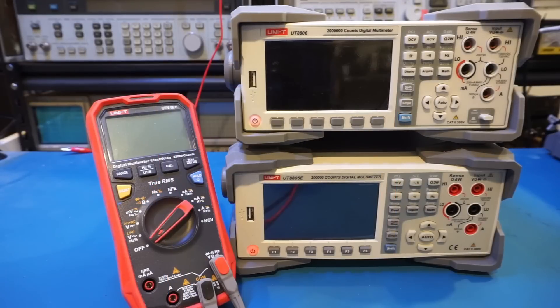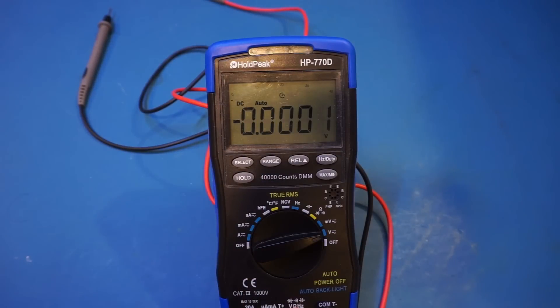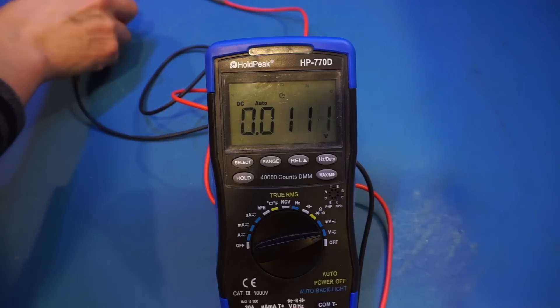So what if I need to measure the 2.3 volts with the same 0.1 mV resolution? Well, essentially any meter with the counts greater than 23,000 should do the trick. For instance, here I have a hold peak HP770D, which is a 40,000 counts meter, and let's verify that reading of the 2.3 volts voltage.